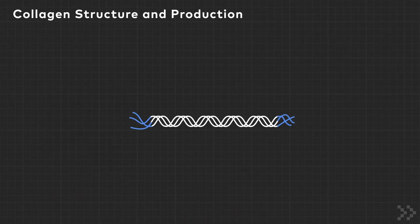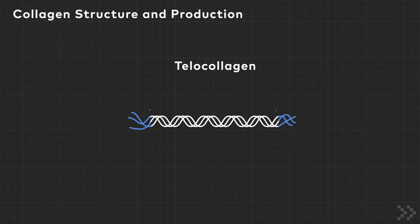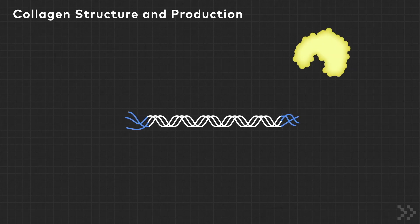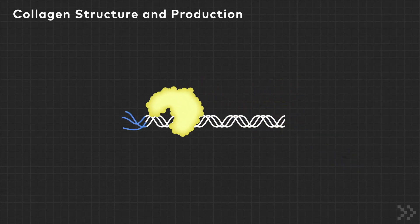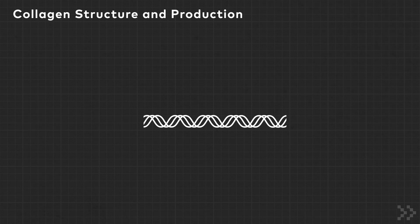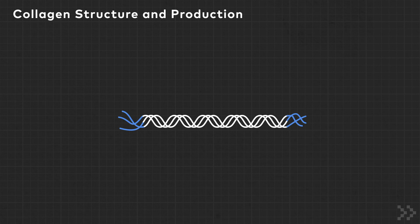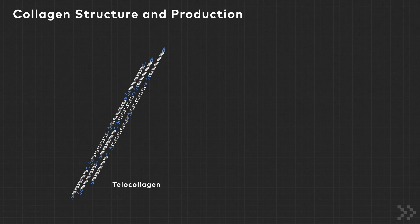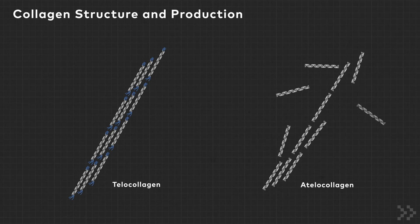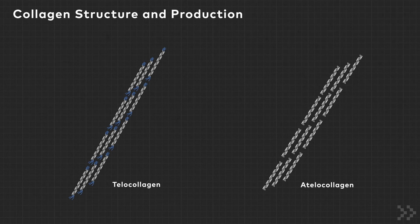Collagen extracted with an acid will result in telocollagen, meaning it has the telopeptide portion of the collagen molecule intact. When extracted using an enzyme, the collagen molecule is cleaved at the junction of the triple helix domain and the telopeptide. The resulting collagen is known as atelocollagen. Telocollagen will form 3D hydrogels much more quickly and stronger than atelocollagen. Some researchers prefer atelocollagen for the increased working time or improved cellular permeability.